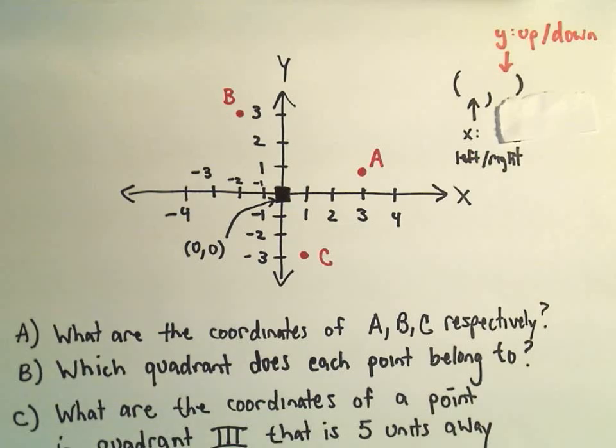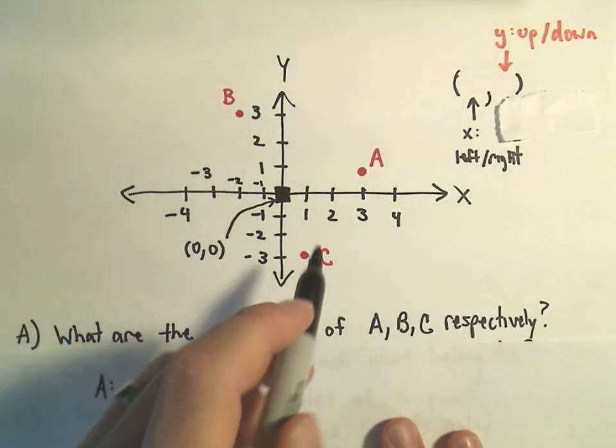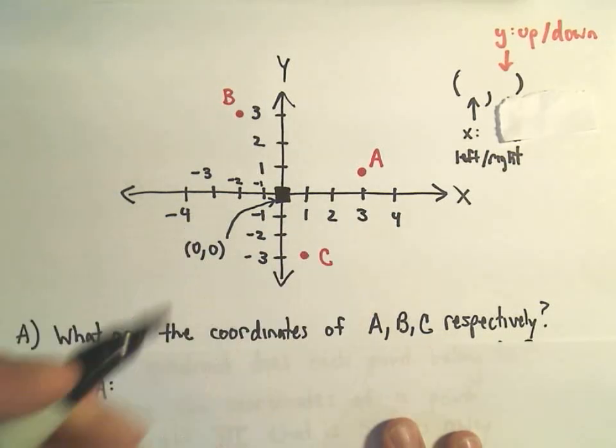Okay, so let's address a few questions here. Part A says, what are the coordinates of these three points A, B, and C? Well, to get the coordinates of A, let's see, from the origin I'm moving positive 1, positive 2, positive 3 units to the right.